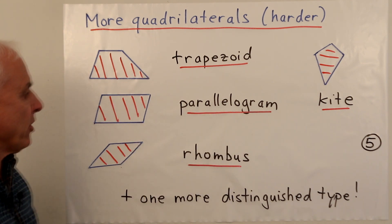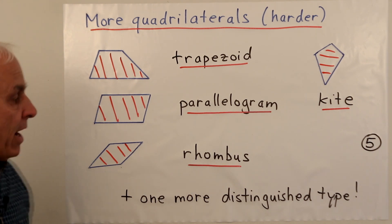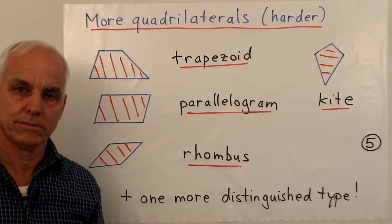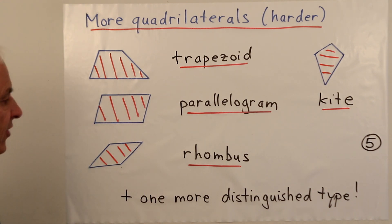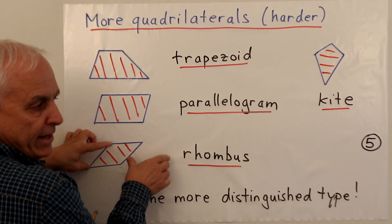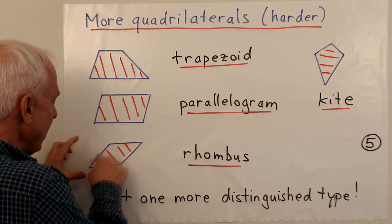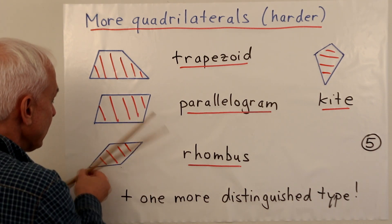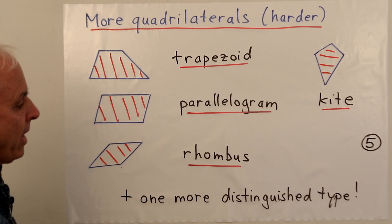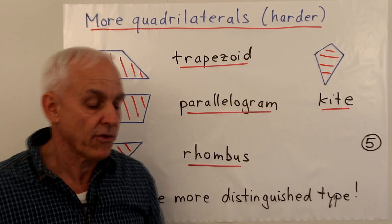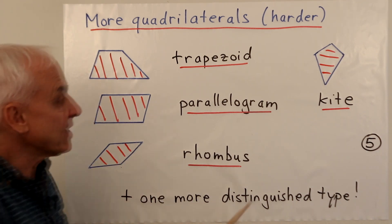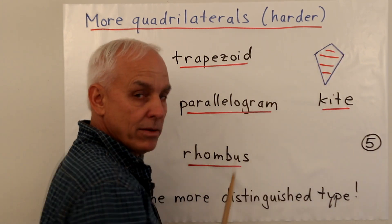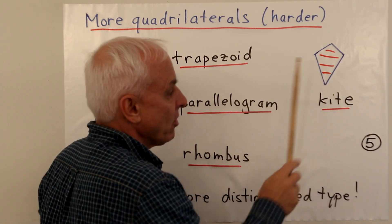A special kind of parallelogram is a rhombus. A rhombus is a parallelogram with the additional property that all four sides are equal. One way of thinking about it is that you're starting with a square and leaning it over — four equal sides, but no longer necessarily perpendicular, though opposite sides are still parallel. And then a weaker but still very familiar shape for kids is a kite shape, where these two sides are equal and these two sides are also equal.